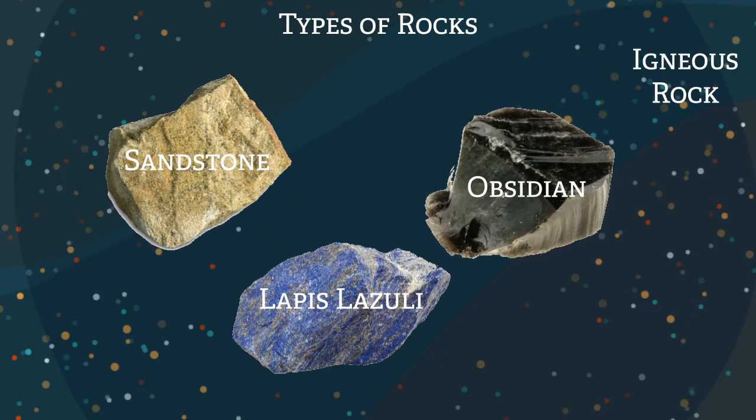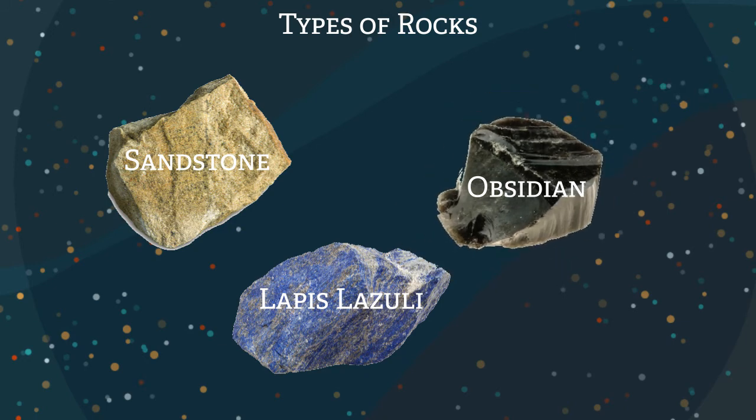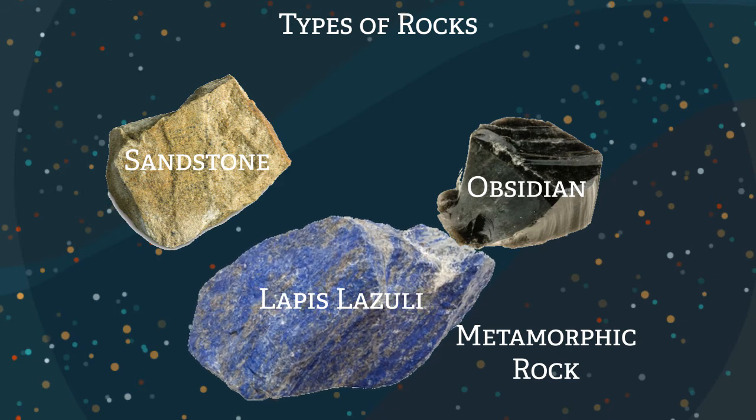Obsidian is an igneous rock. This will form when rock melts into magma, then cools rapidly. Lapis lazuli forms when rocks go through lots of heat and pressure.